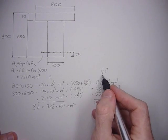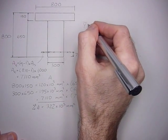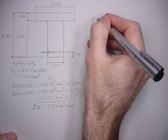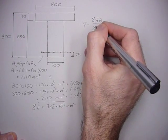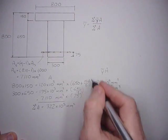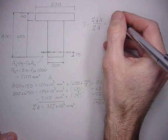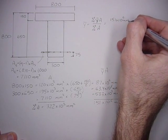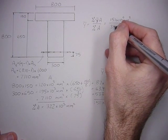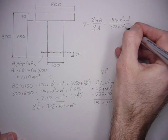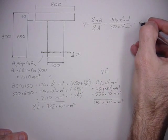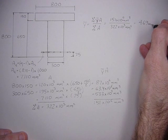If we take the Y bar areas over the areas, we have the Y bar. Y bar equals the sum of the Y bar areas divided by the sum of the areas: 151 times 10 to the sixth millimeters cubed over 322 times 10 to the third millimeter squared. That comes to 469 millimeters.